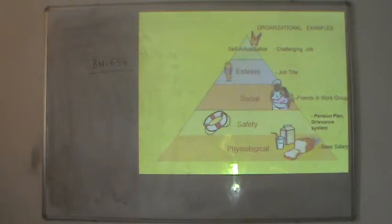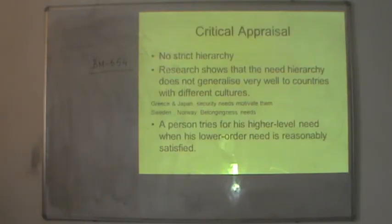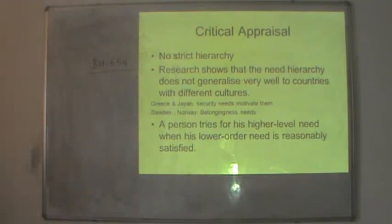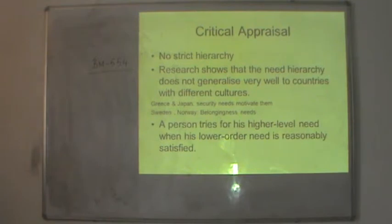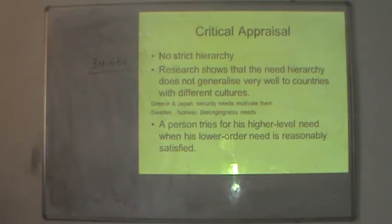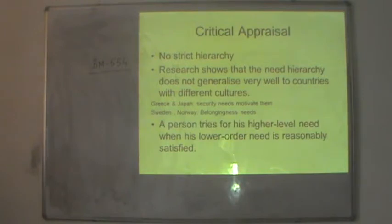Although Maslow's theory is very renowned and is still quoted in studies of motivation, it had certain criticisms from other researchers. The first criticism was that there is no strict hierarchy. Other researchers believe you cannot build the hierarchy in this way — it is not necessary that a person first satisfies a lower level need and then moves on to the second level. They also show that the need hierarchy does not generalize well to countries with different cultures.